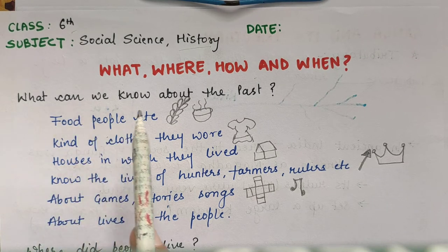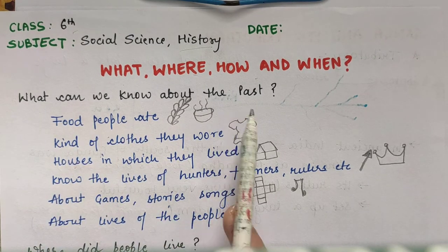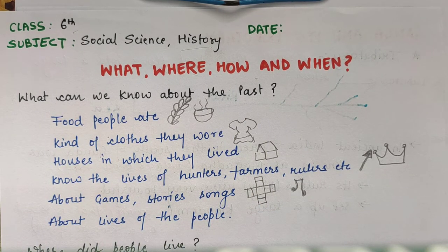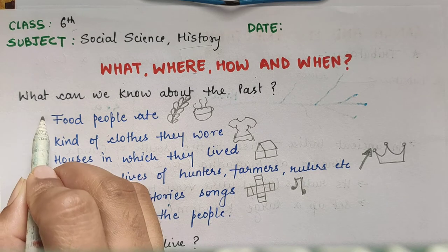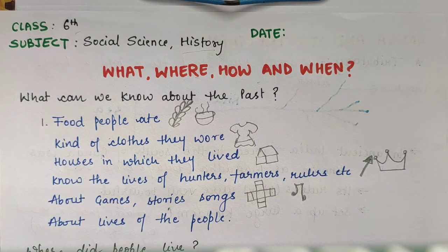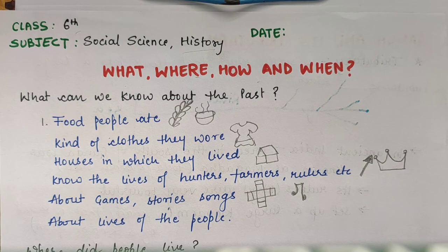So what can we know about the past? The first thing which we always consider is what should we know about the past. There are a few things which we can know. The first thing is food — the kind of food people ate, what kind of food people were eating at that time period.